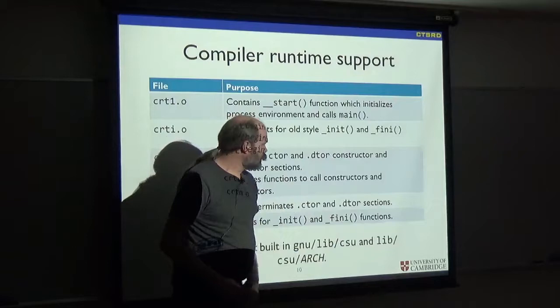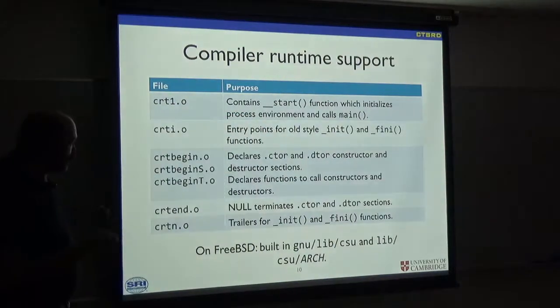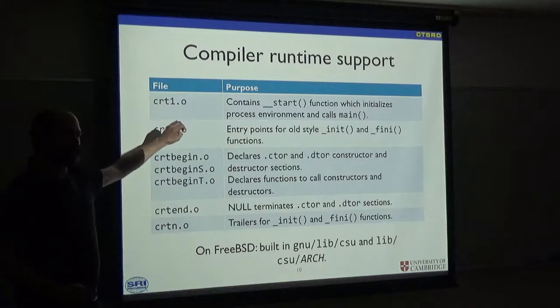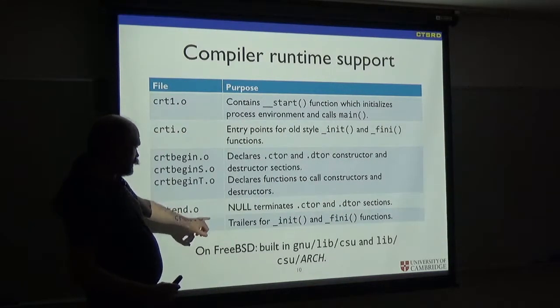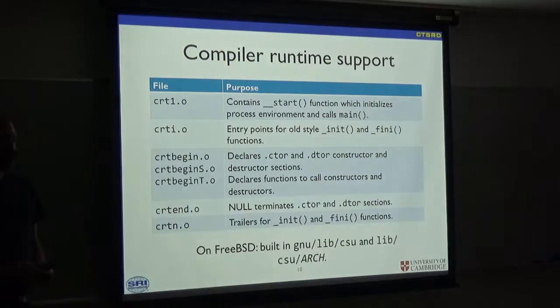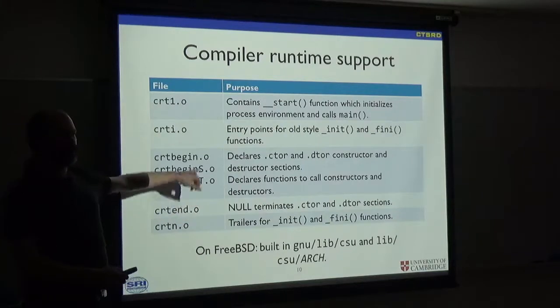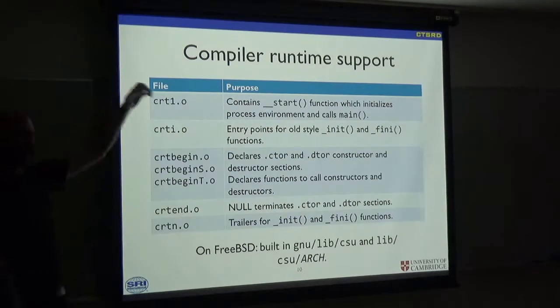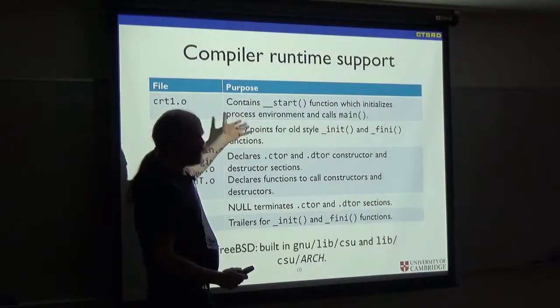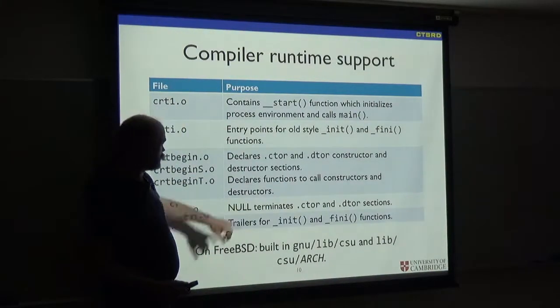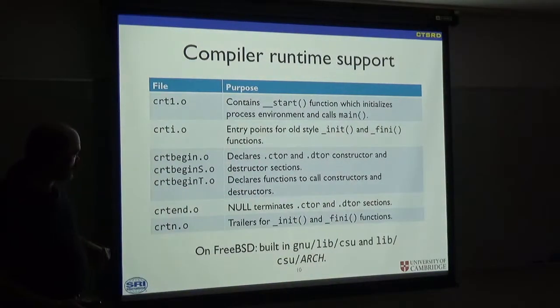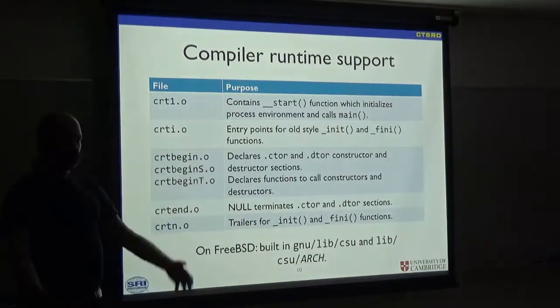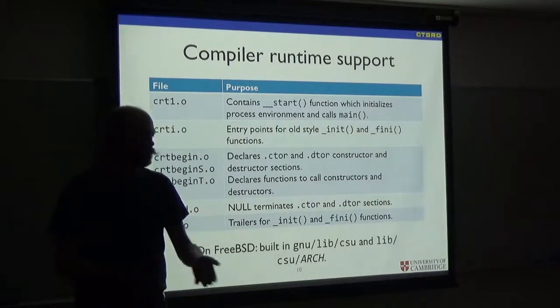Then there's a bunch of stuff whose job it is to allow a variety of different initializers to work. The first is CRTi, which supports two functions. CRTi contains the bit of the function which sets up the stack to enter the function. CRTn contains the bit to return from the function. Any other file that's linked in can contain some random machine code. The linker concatenates them all together.